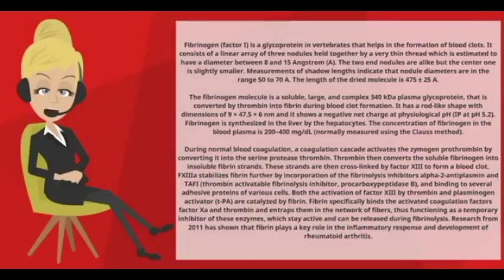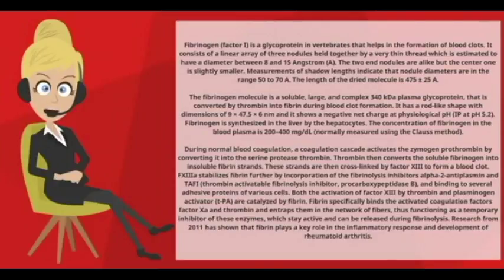Both the activation of factor XIII by thrombin and plasminogen activator tPA are catalyzed by fibrin. Fibrin specifically binds the activated coagulation factors Xa and thrombin and entraps them in the network of fibers, thus functioning as a temporary inhibitor of these enzymes.